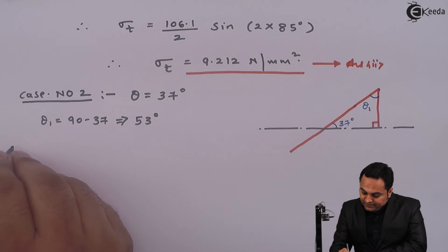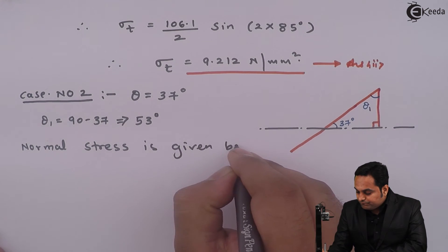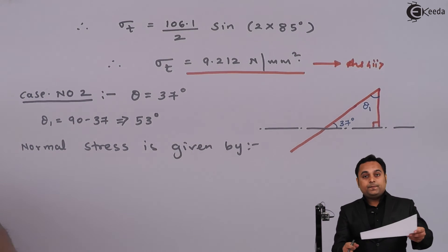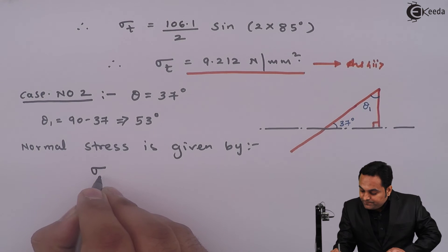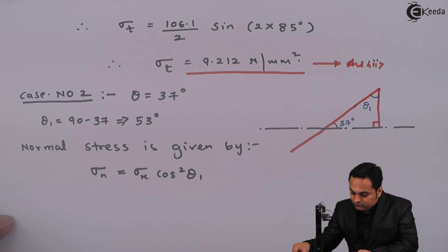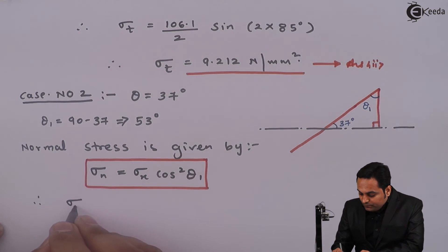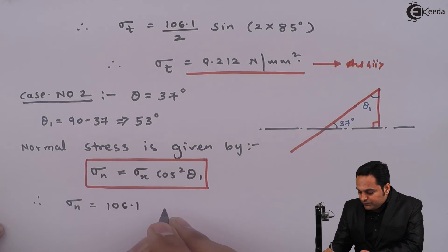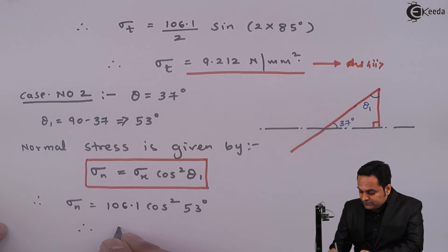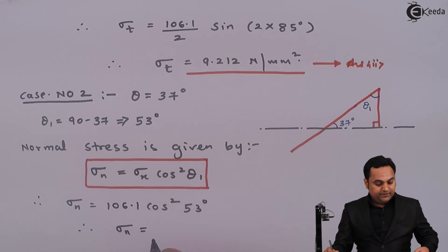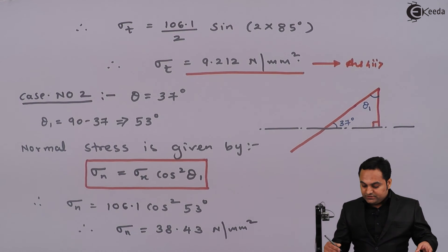Using the same formula for normal stress: sigma n = sigma x × cos²(theta₁) = 106.1 × cos²(53°) = 38.43 Newton per mm². This is the third answer.